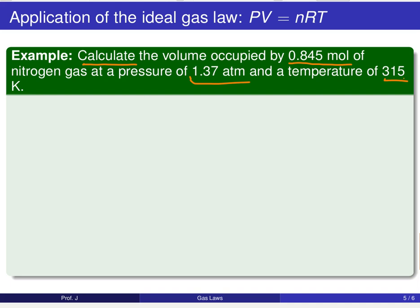So just as with any word problem, what we're going to want to do is write out what we're given. We're first told that we need to figure out what the volume is. We don't know what the volume is. But we know that we're going to be starting off with 0.845 moles of nitrogen gas. And we know that the pressure is 1.37 atm and the temperature is 315 kelvin.